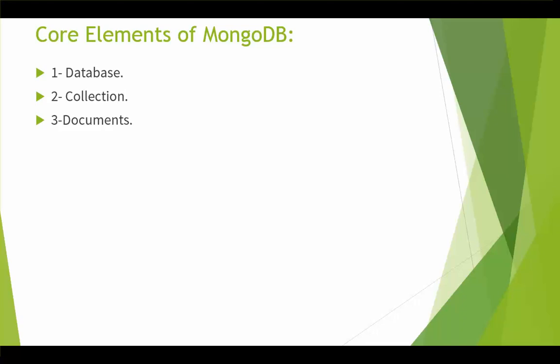Core elements of MongoDB. Firstly, the database. This is the top-level element. However, a relational database contains mostly tables and views. MongoDB, on the other hand, is a physical container of structured calls — collection. Each database has its own set of files on the file system. A single MongoDB server typically has multiple databases.